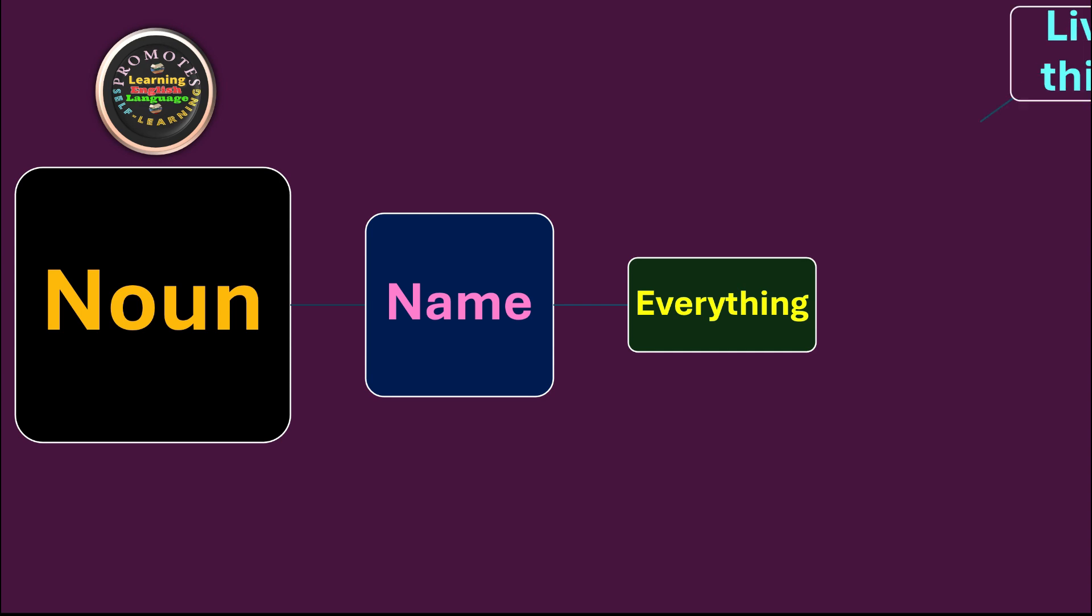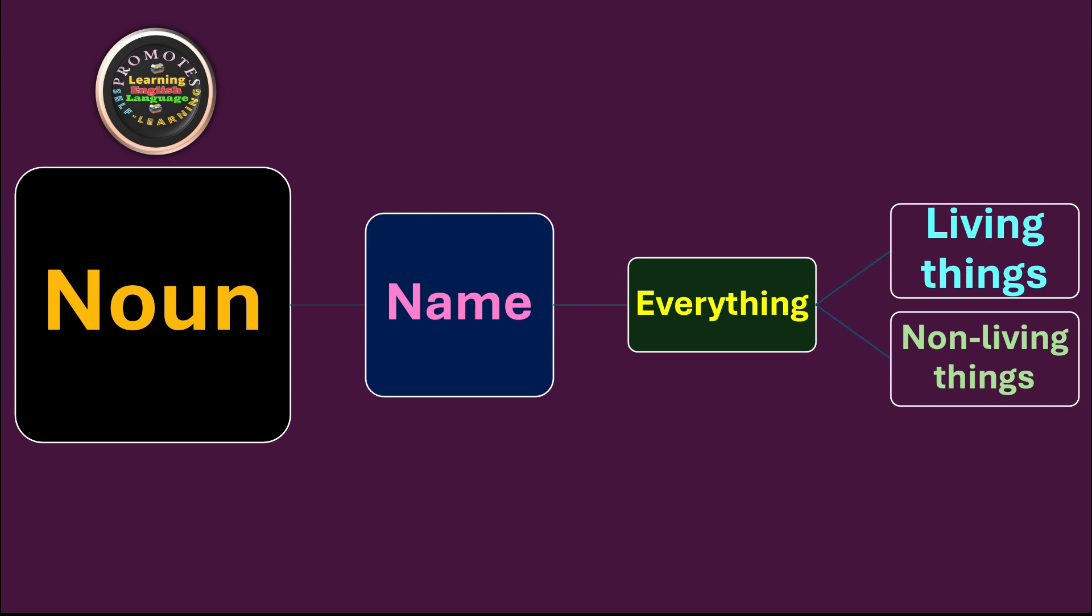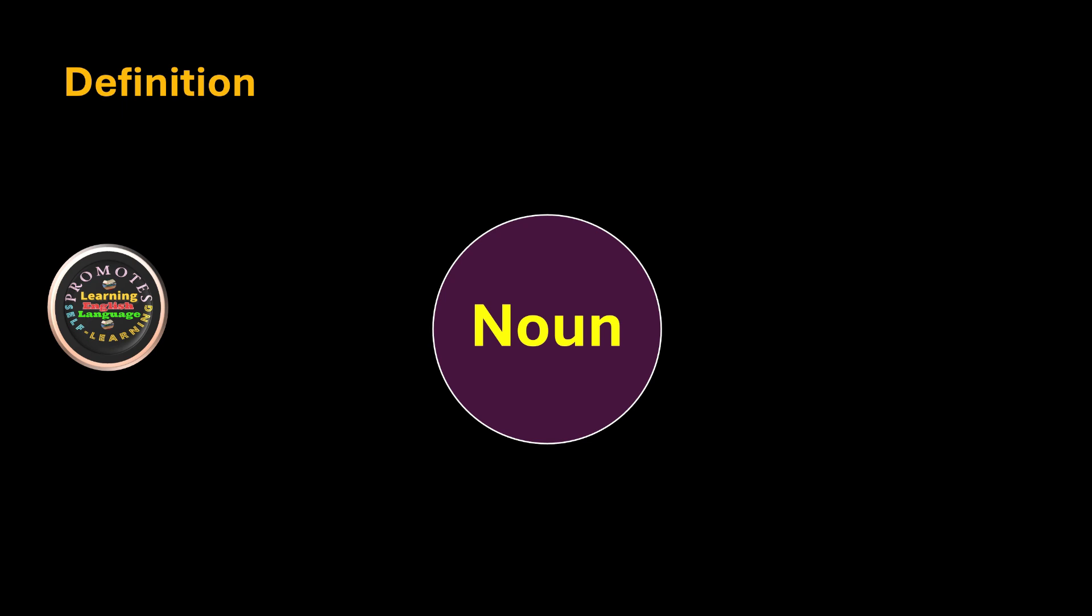When we say everything in the world, it may be all living things, and it may also be the name of all non-living things. We continue our discussion. Definition of noun: normally noun is defined as the name of a person, place, animal, bird, or thing.